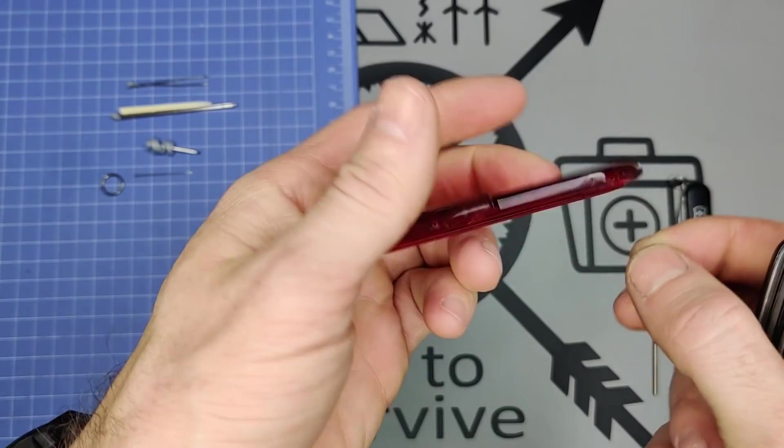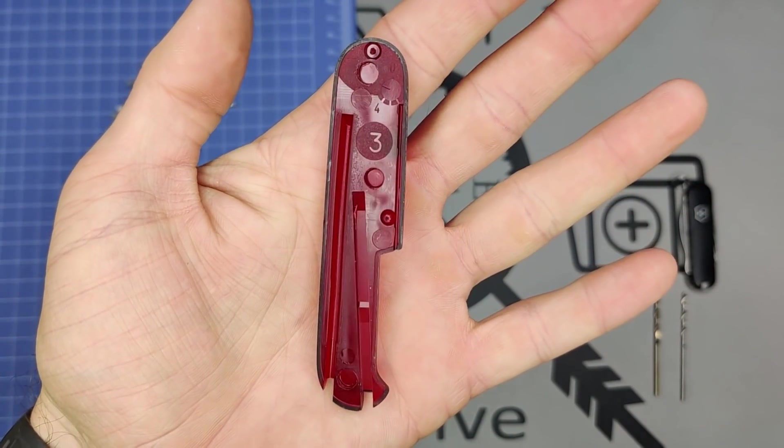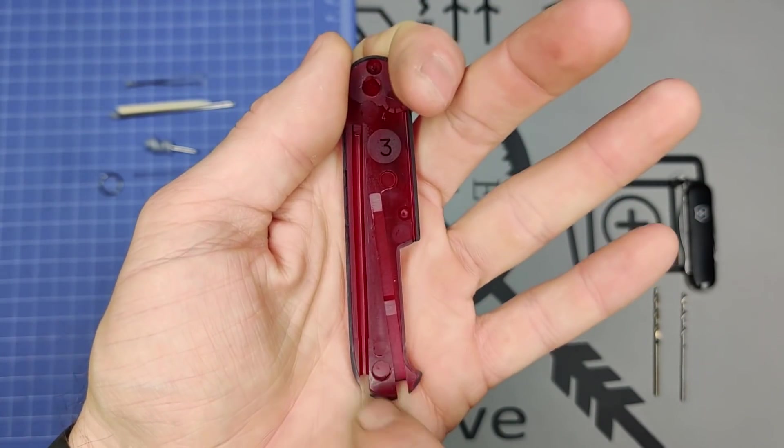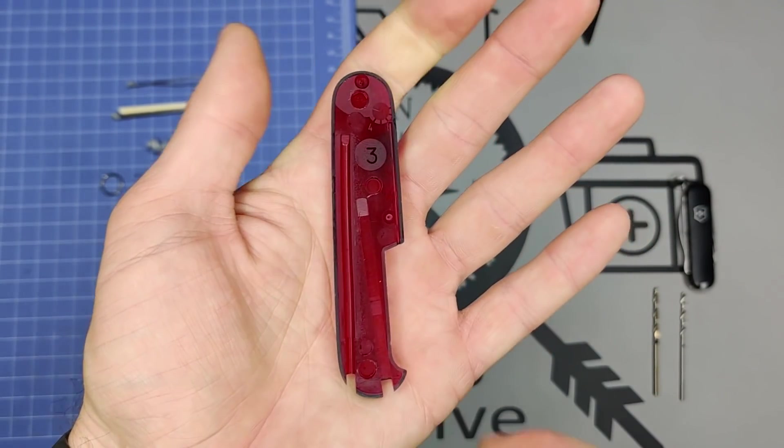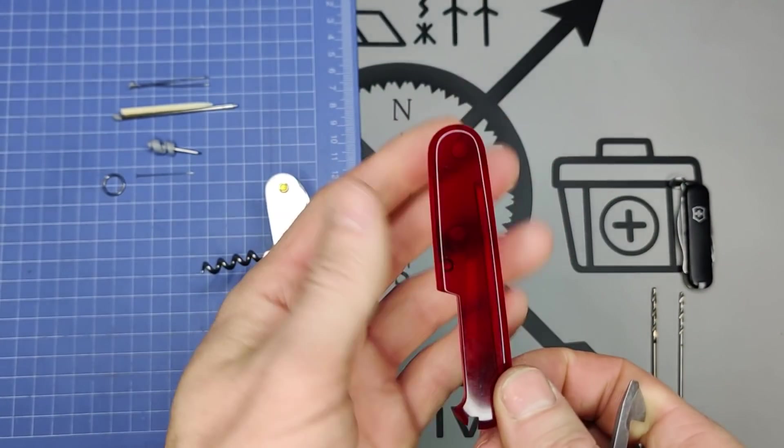And you look at the back, you can see how well you did it on taking off the scale. Sometimes you have a big chunk of plastic that will break off. This actually came off really well.